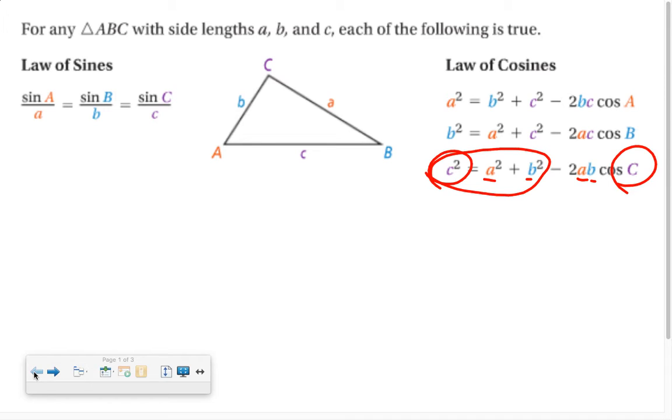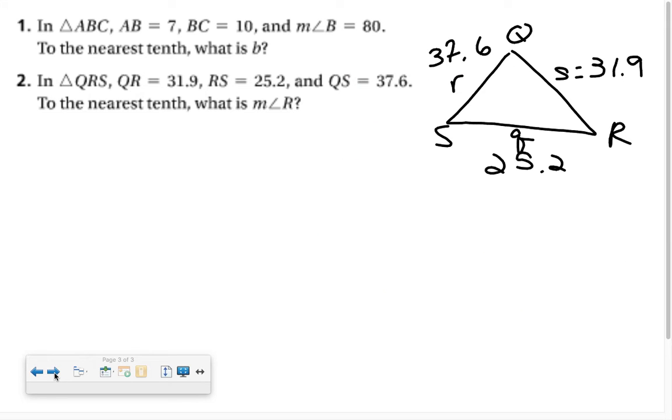Remember that the angle in the equation has to be the same letter as the equation starts with. So, if I'm finding the measure of angle R, I'm starting the equation with segment R. And again, I'm going to write the whole equation out without the numbers plugged in. And then I'll plug the numbers in. And we'll simplify and solve. So, it'll be R squared equals Q squared plus S squared minus 2QS times the cosine of angle R.